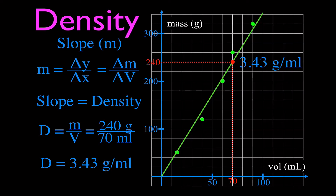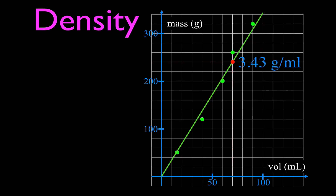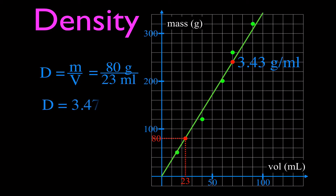I'm just going to check it with another point. The second point I choose: mass is 80 and the volume — it's not right on a grid line. It looks like it's more than 20, less than 25. I'll read it as 23. So mass is 80, volume is 23, and that gives 3.47 grams per milliliter. That's not exactly the same as 3.43, but it's pretty close — probably because I couldn't read the volume precisely; it might be 22, 23, or 24. But you can see the line has one slope, so the density all along it is right around 3.43 to 3.47, or right in between.